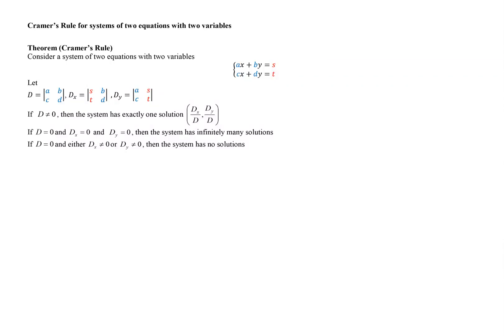Cramer's rule is a method of solving systems of linear equations using determinants. We'll start with writing our system so that the left-hand side of each equation contains the variables and the numbers without variables are on the right-hand side.